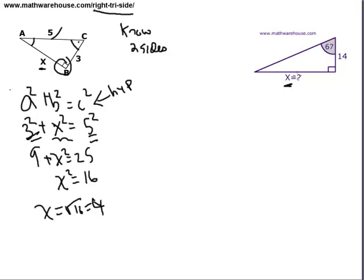So know two sides, we want to find a third, right triangle - Pythagorean Theorem. Now let's think about this triangle here. We know one side and we know one angle.